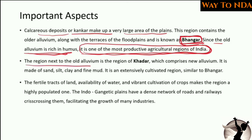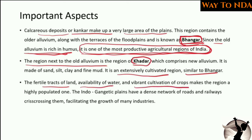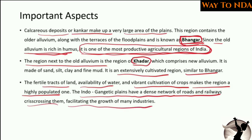The region next to the older alluvium (Bhangar) is the Khadar, which is made up of newer, more recent alluvium deposits by the river. These are also very extensively cultivated regions, similar to Bhangar. The fertile land, availability of water, and cultivation make this a highly populated region. The Indo-Gangetic plains have a dense network of roads and railways facilitating the growth of many industries.